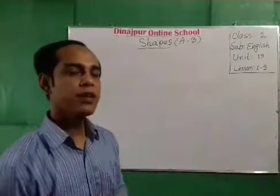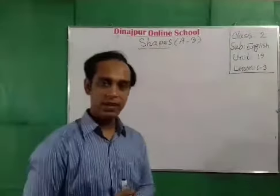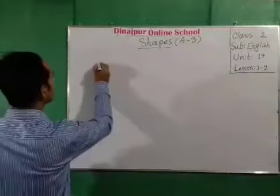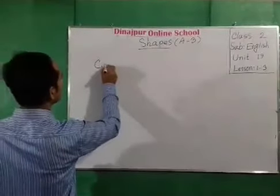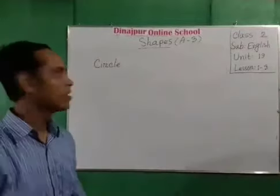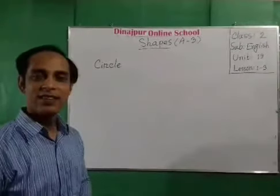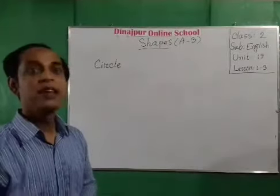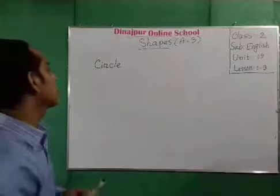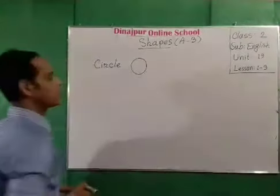Now I will write down the shapes' names on the whiteboard. You look attentively at the whiteboard. My dear students, what is this? Can you say? Yes, this is a circle. Okay. Now I draw a circle.